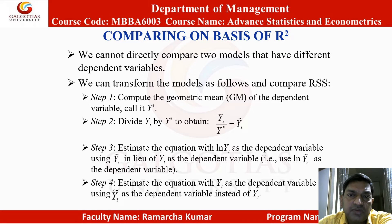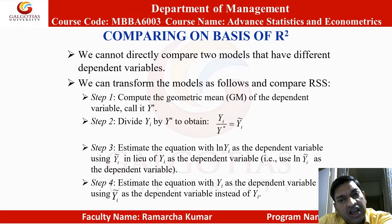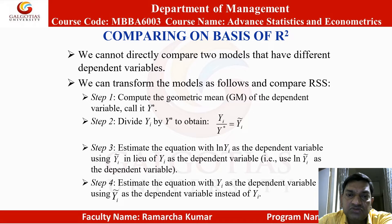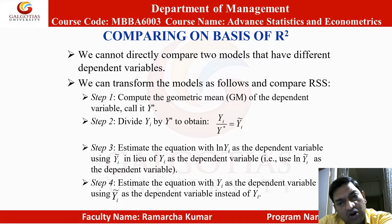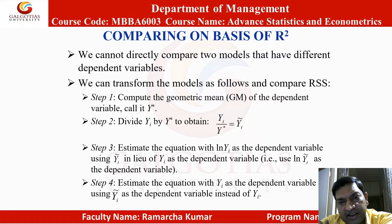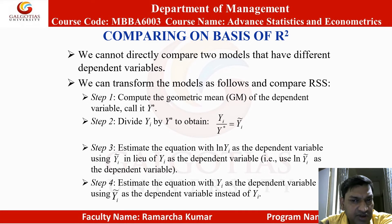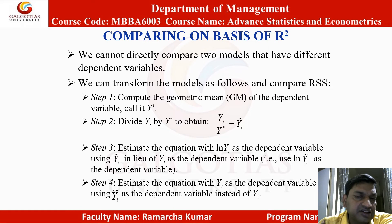Comparing models on the basis of R-squared: we cannot directly compare two models that have different dependent variables. We can transform the model as follows and compare RSS. Step 1: compute the geometric mean (GM) of the dependent variable, call it y*. Step 2: divide y_i by y* to obtain ỹ_i. Step 3: estimate the equation with ln(y) as the dependent variable using ỹ_i in lieu of y_i. Step 4: estimate the equation with y_i as the dependent variable using ỹ_i instead of y_i.